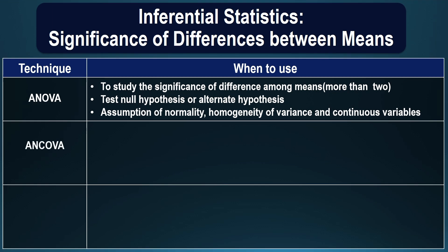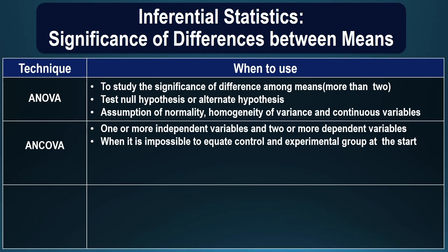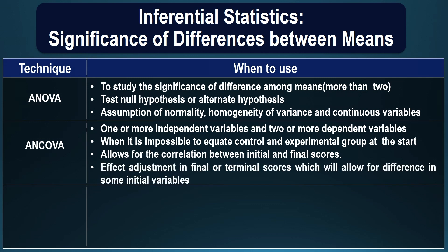Analysis of covariance (ANCOVA) is used when there exist initial differences among the groups on any one of the variables, in which case we cannot use analysis of variance alone. ANCOVA takes into account those differences and helps the researcher adjust the post-test scores on the dependent variable. It allows for the correlation between initial and final scores and effects an adjustment in terminal scores, which rules out initial differences that exist on one of the independent variables.